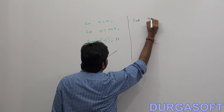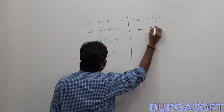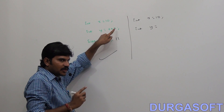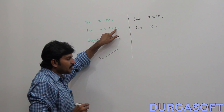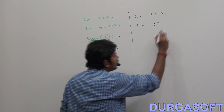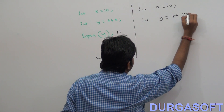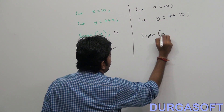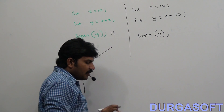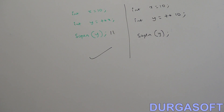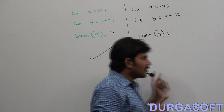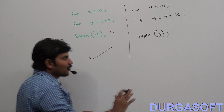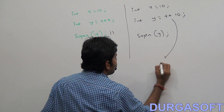Now I'm taking: int x equals 10, int y equals ++x. But wait — since x is 10, why don't you take ++10 instead? int y equals ++10, and System.out.println(y). Can you tell: is it valid or invalid? It's invalid. Because if two things are on the board, the first one is valid, automatically the second one is invalid — that's a universal rule. You're going to get a compile error.